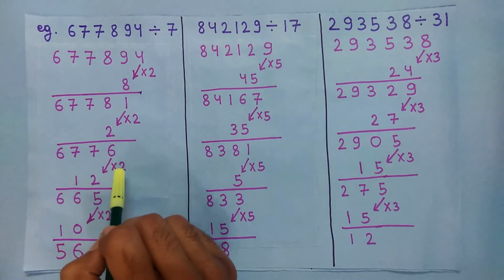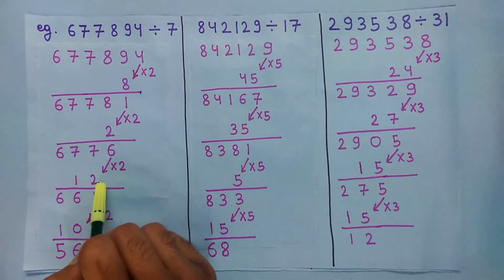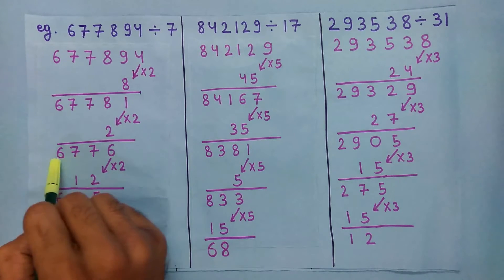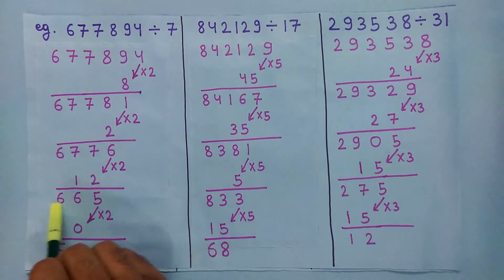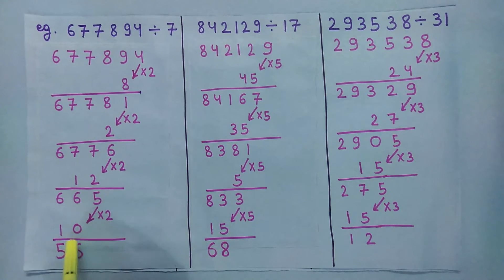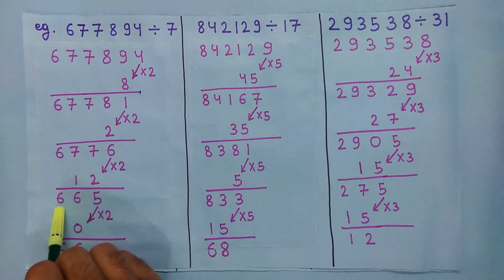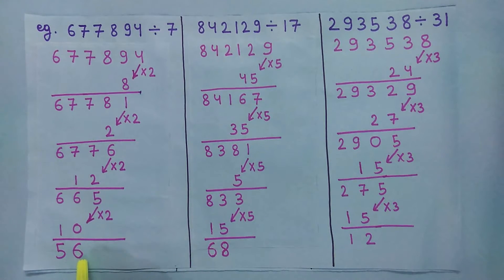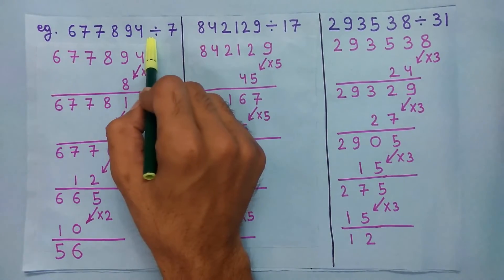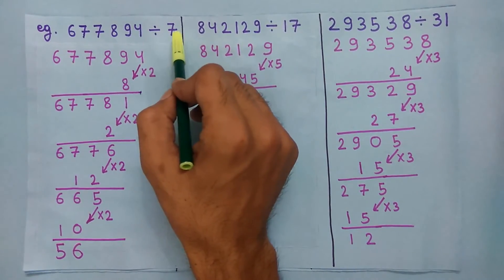Again multiply the last digit by 2 and we get 12. Now subtract this 12 from the remaining number. Again multiply the last digit by 2 and we get 10. Subtract this 10 from the remaining number 66 and we get 56. Now 56 is divisible by 7, so this number is also divisible by 7.